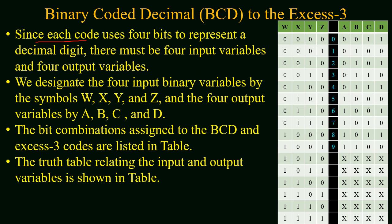The decimal digits range from 0 to 9, where 9 requires a minimum of 4-bit binary representation, so we will have a minimum of 4-bit input. For the output, the XS3 code corresponding to decimal 0 is 3, and the XS3 code corresponding to decimal 9 is 12 (which is 1100 in binary), requiring 4 bits. So the output of the circuit will also be represented by 4 bits. We designate the 4 input variables by the symbols W, X, Y, Z and the 4 output variables by A, B, C, D. The bit combinations assigned to BCD and XS3 codes are listed in the truth table relating the input and output variables.